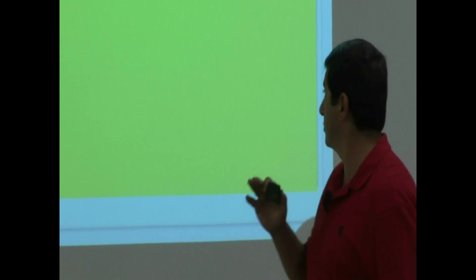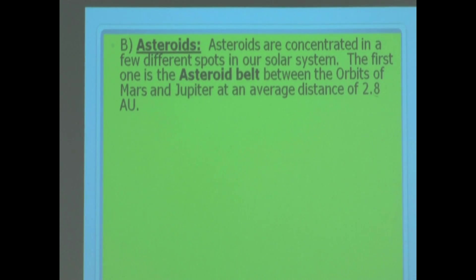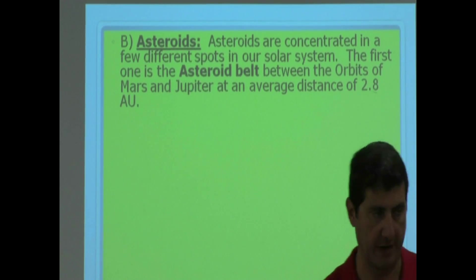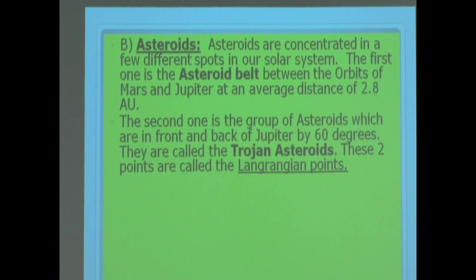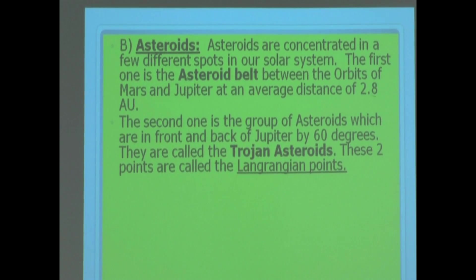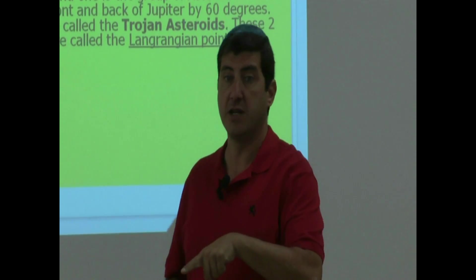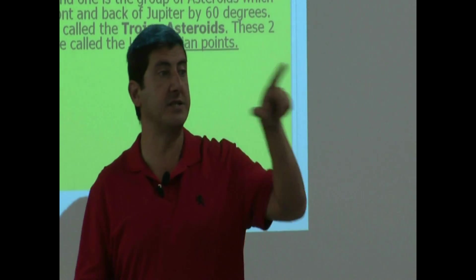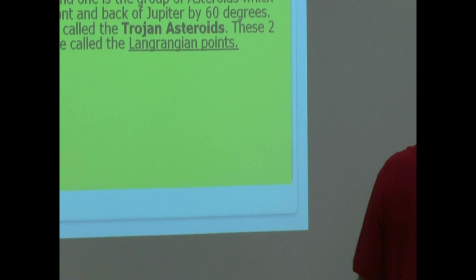The first one is the asteroid belt between the orbits of Mars and Jupiter. Pretty much most of you have heard of this and know of this. It's between the orbit of Mars and Jupiter. Average distance of 2.8 AUs from the sun. The second one is the group of asteroids which are in front and back of Jupiter. They are basically going around the sun, and their orbit resembles that of Jupiter. They are 60 degrees in front of Jupiter, and 60 degrees behind.